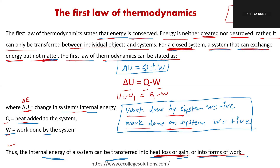Work done by the system, W, is considered negative, and work done on the system, W, is considered positive. We can see that the internal energy of a system can be transferred either as heat loss or gain, or in the form of work, because internal energy is equal to Q plus or minus W.